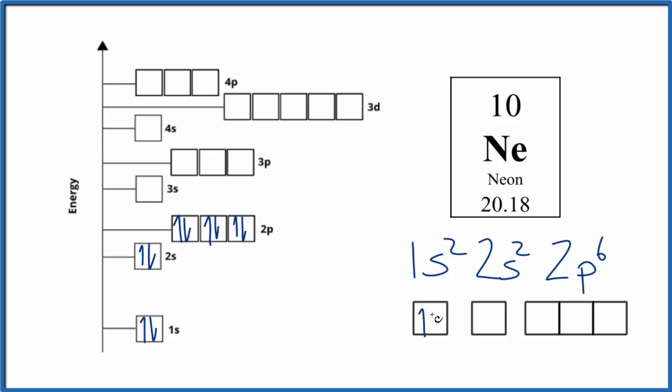But it's horizontal now: 1s², 2s², and then 2p⁶ here. So just another way to represent where those electrons are.